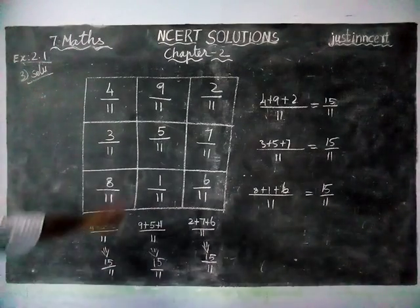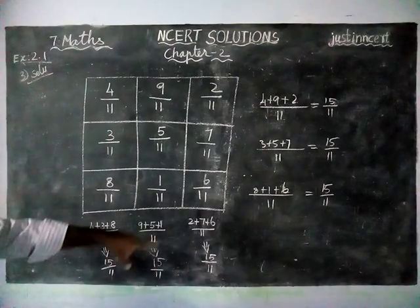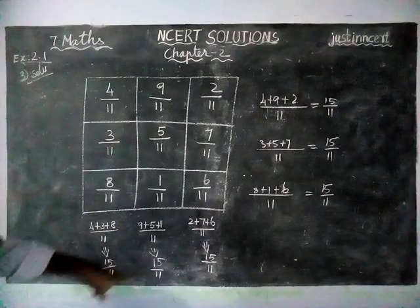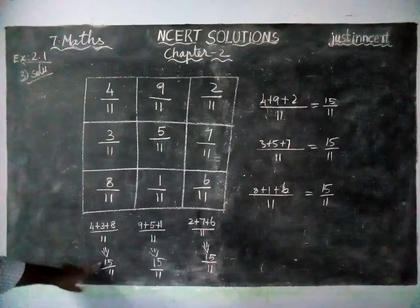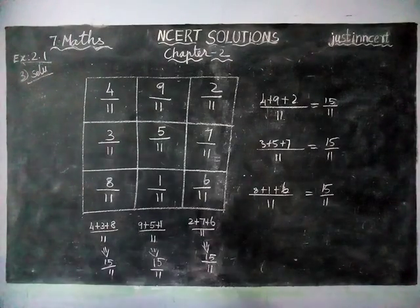Now all the columns and rows are 15 by 11. Now we are going to check it diagonally.